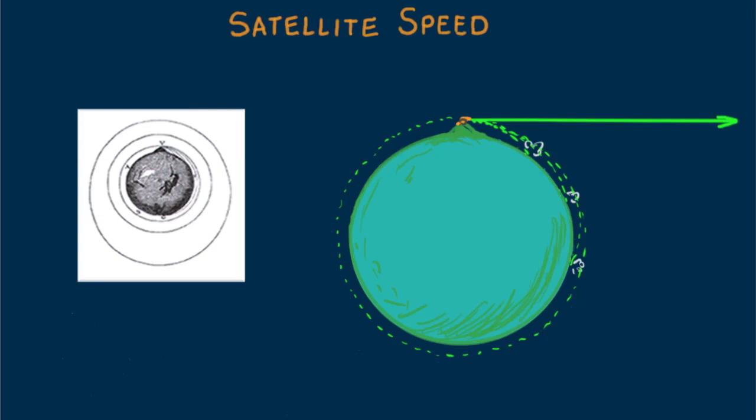Newton made calculations of what the speed would be and realized that cannonballs could never be fired that fast. Rocketry wasn't the order of the day back then, and certainly he wasn't hip to multi-stage rockets. So Newton did not envision humans ever putting satellites in orbit.